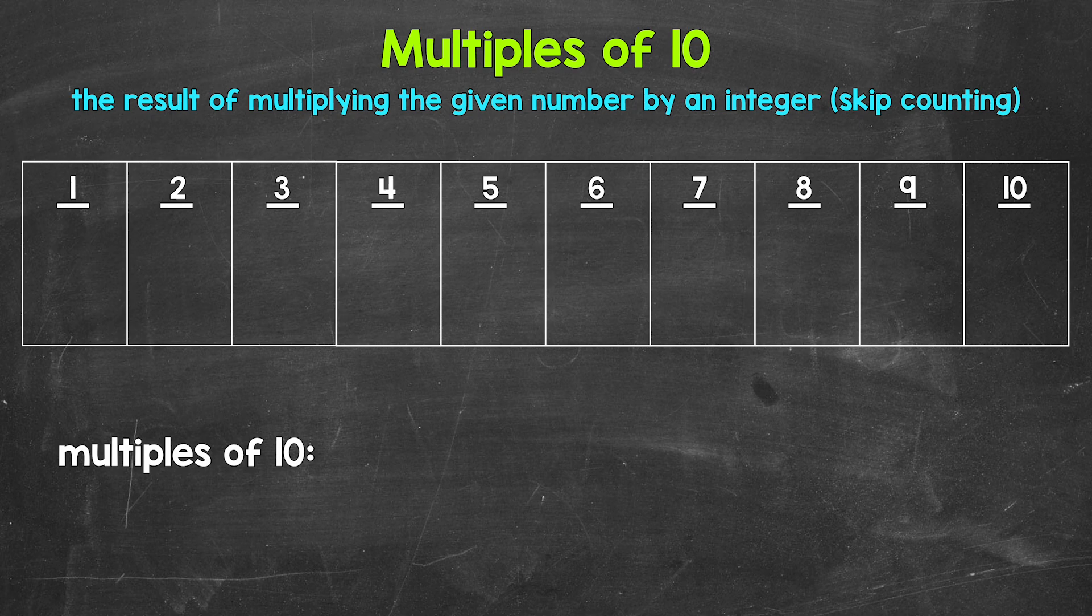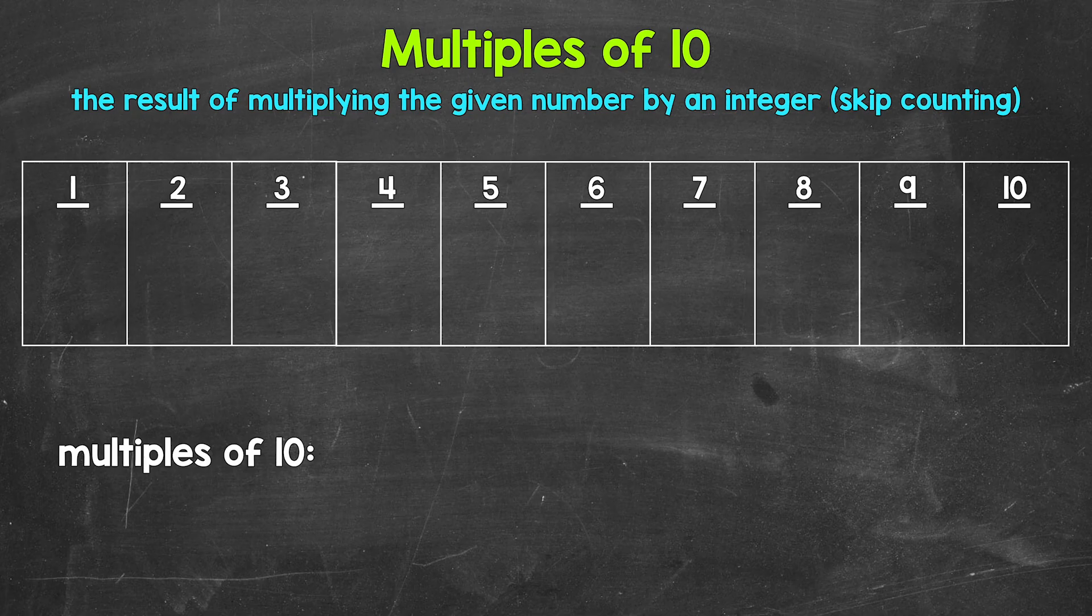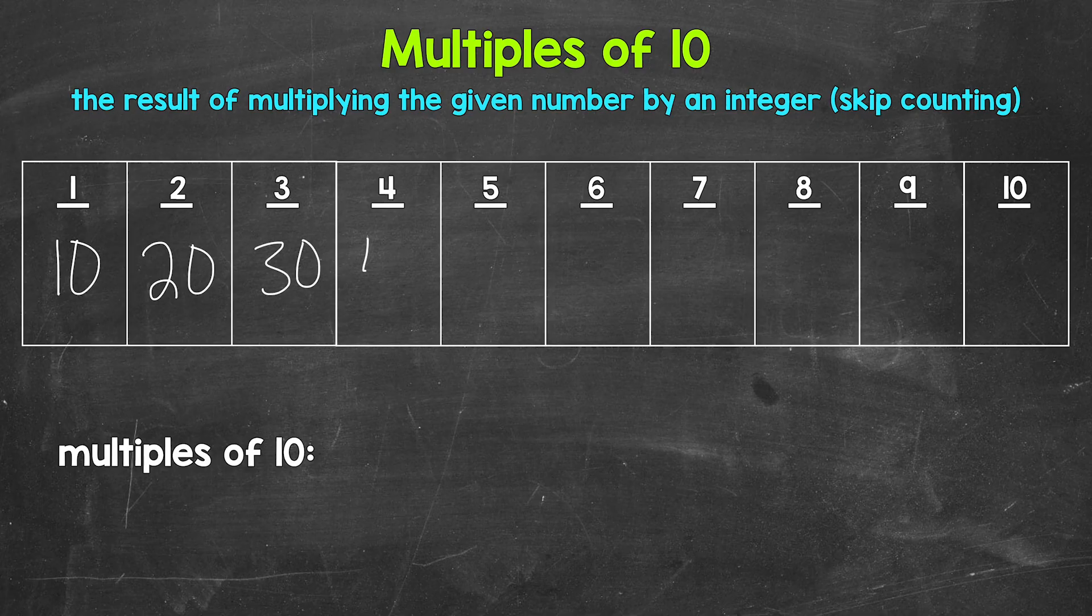So looking at the multiples of 10, let's start with 1 times 10. That gives us 10. 10 is the first multiple of 10. Then we have 2 times 10, that's 20. 20 is the second multiple of 10. Then 3 times 10, that's 30. 4 times 10 is 40. 5 times 10 is 50.